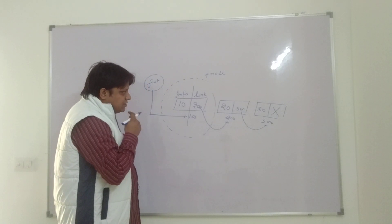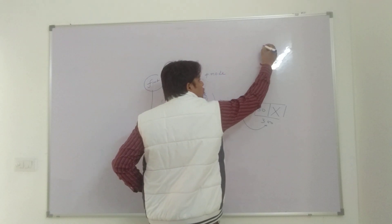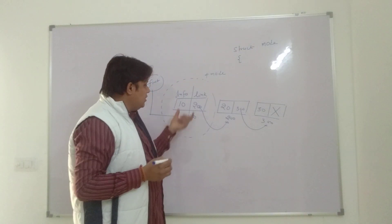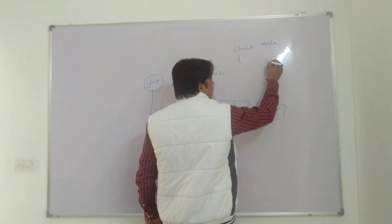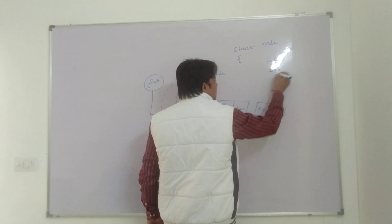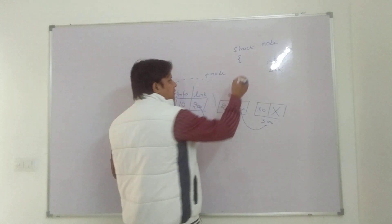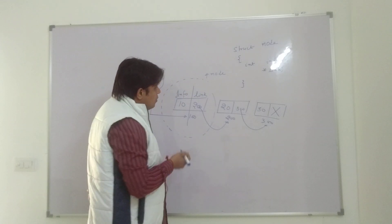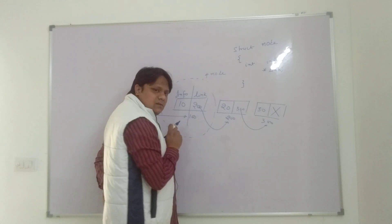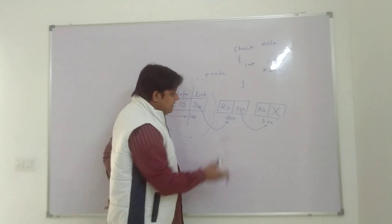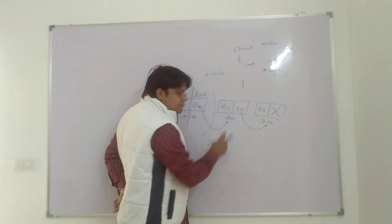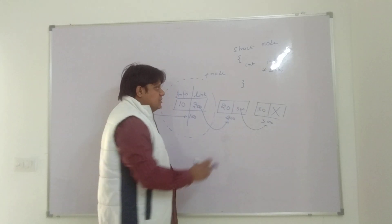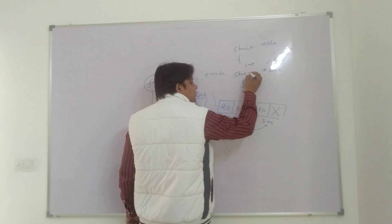Let's define this structure. The name of the structure is 'node', so we write 'struct node'. This structure contains two members: 'info' and 'link'. The data type of 'info' is integer, so we write 'int info'. The 'link' member holds an address, so it must be a pointer. Since it holds the address of a complete structure, the type of this pointer is struct node — so we write 'struct node* link'.